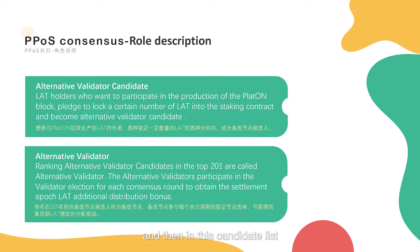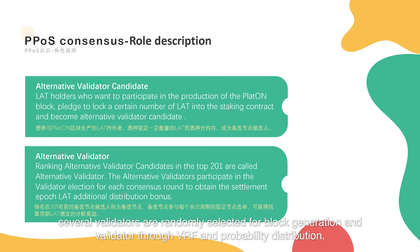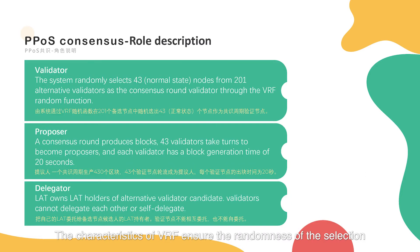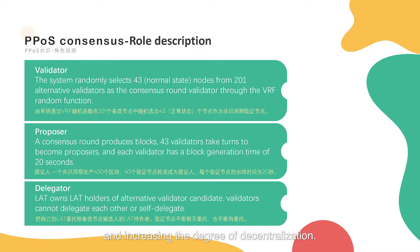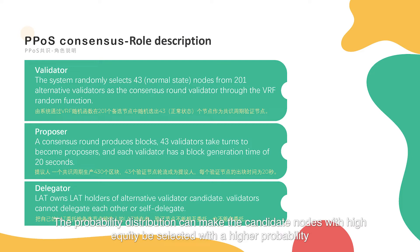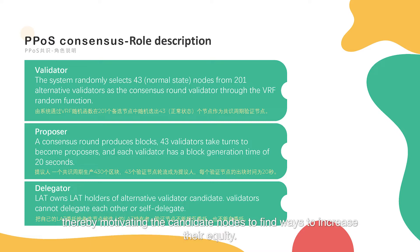From this candidate list, several validators are randomly selected for block generation and validation through VRF and probability distribution. The characteristics of VRF ensure the randomness of the selection, thereby reducing the probability of attacking the validator and increasing the degree of decentralization. The probability distribution can make the candidate nodes with high equity be selected with a higher probability, thereby motivating the candidate nodes to find ways to increase their equity.